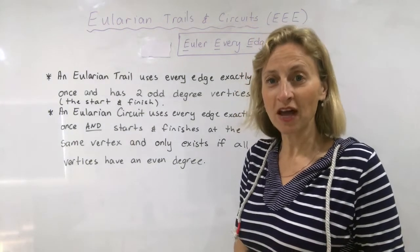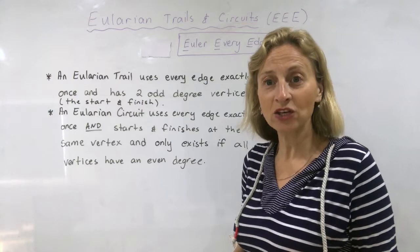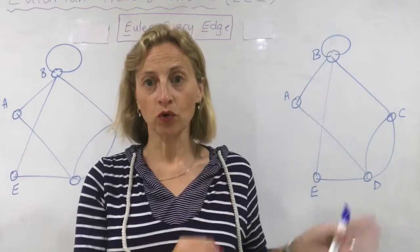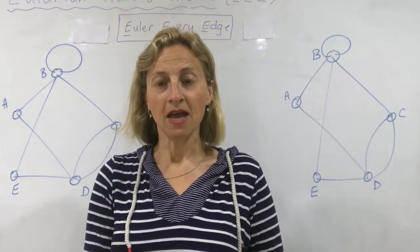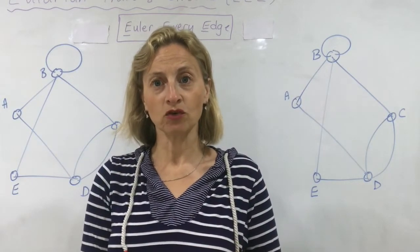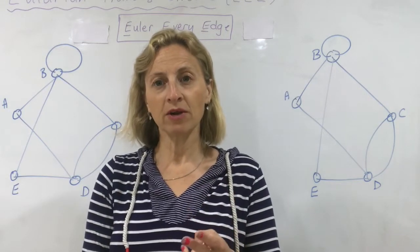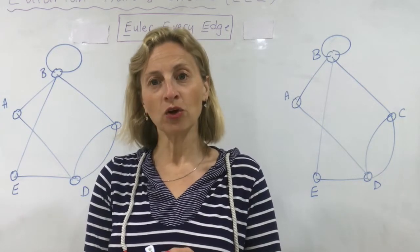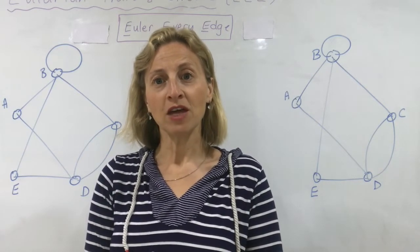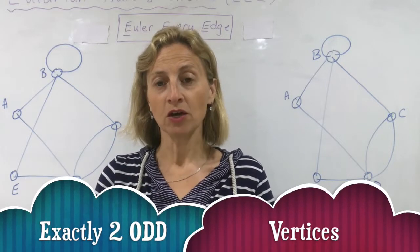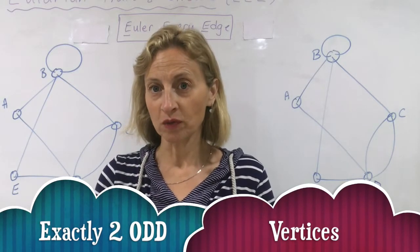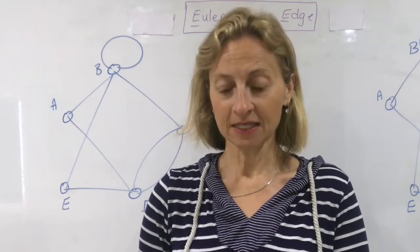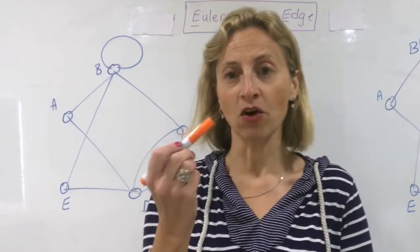Let's do an example because I always find it's easier to understand when you can visualize it. I have the same network drawn twice behind me, and I'd like to draw two different Eulerian Trails. Remember, an Eulerian Trail can only be drawn if I have exactly two odd vertices. So the first thing I need to do is write down how many degrees each vertex has. I'm going to do the vertices in orange.